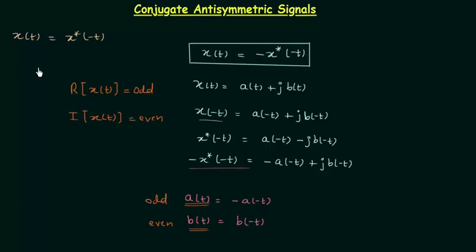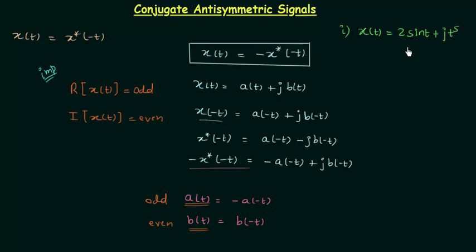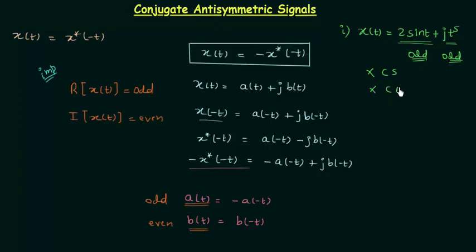This is a very important point and we will use it to determine whether a signal is conjugate antisymmetric. In the first problem, signal x(t) = 2sin(t) + jt⁵. The real part is 2sin(t), which is odd, and the imaginary part t⁵ is also odd. So signal x(t) is neither conjugate symmetric nor conjugate antisymmetric.